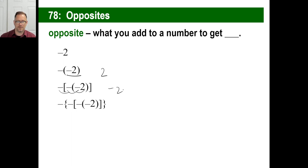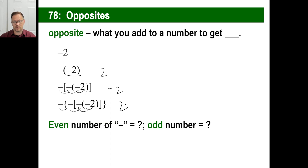And I bet you know what's coming next. That's the opposite of two, but that's going to be two. Then the opposite of two is negative two, and the opposite of negative two is going to be two again. So there is a pattern here: an even number of negatives or opposite signs means it's going to be a positive number. An odd number means it's going to be a negative number.